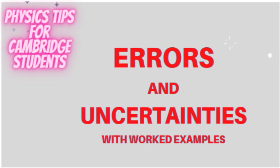Welcome to the Physics Tips for Cambridge Students YouTube channel. Today we are going to look at a past exam question on errors and uncertainties. The paper is the November 2009, paper 2, question 1.